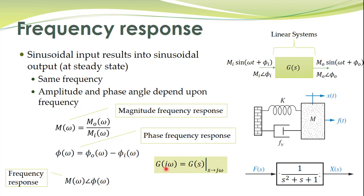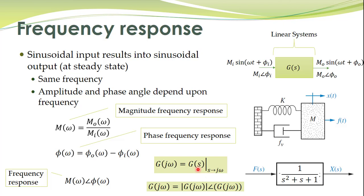If you are given the transfer function of a system, the frequency response G(jω) can be simply obtained by substituting the Laplace variable s equal to jω, where ω is the frequency. G(jω) is a complex number that can be written in the form of its magnitude and phase angle. So the frequency response of a system is simply obtained by substituting s = jω into the transfer function.